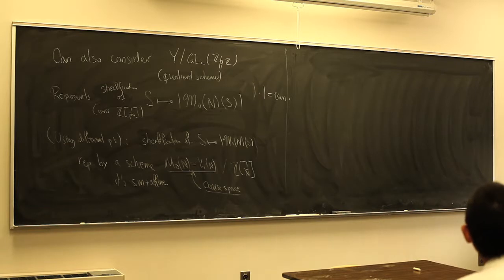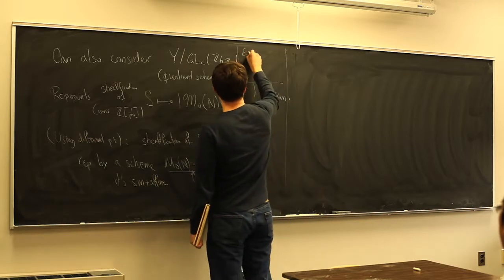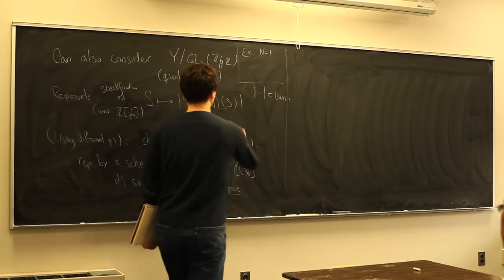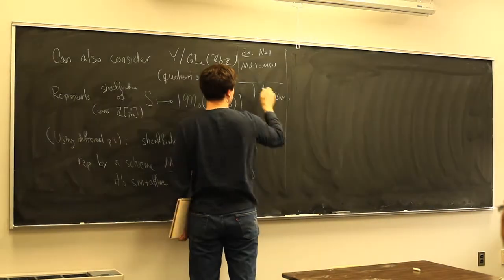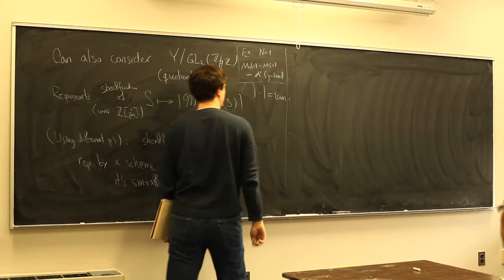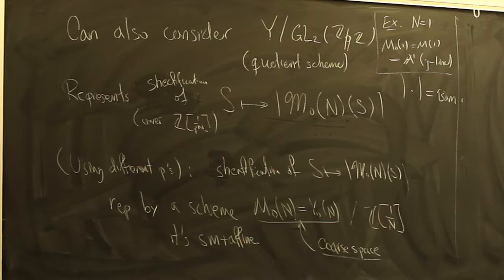On points over an algebraically closed field, the stack and coarse space agree — that's a generalization of the statement that the j-invariant determines the elliptic curve over an algebraically closed field. The main example to keep in mind is that when n = 1, the coarse space is the j-line. So M₀(1), which is the same as M(1) with no level structure, is A¹, the j-line. But the stack M̃₀(1) is more complicated — its fundamental group is like the profinite completion of SL₂(Z), so it's very interesting.